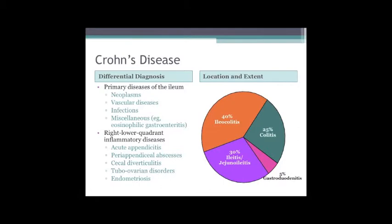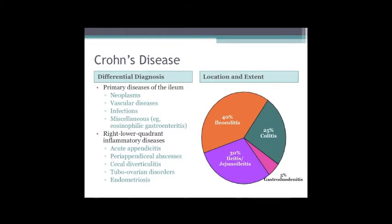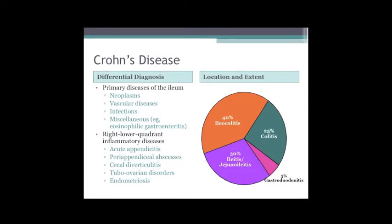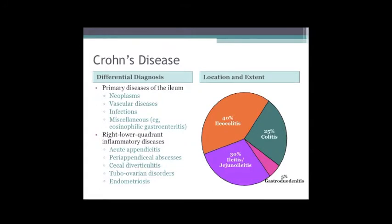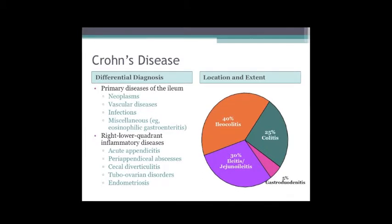Differential diagnosis: since Crohn's disease predominantly involves the ileum in over 70% of patients, you need to think about diseases of the right lower quadrant including acute appendicitis, peri-appendiceal abscess, cecal diverticulitis, tubo-ovarian disorders, endometriosis, and neoplasms of the ileum. Tissue biopsy and scanning are very helpful.